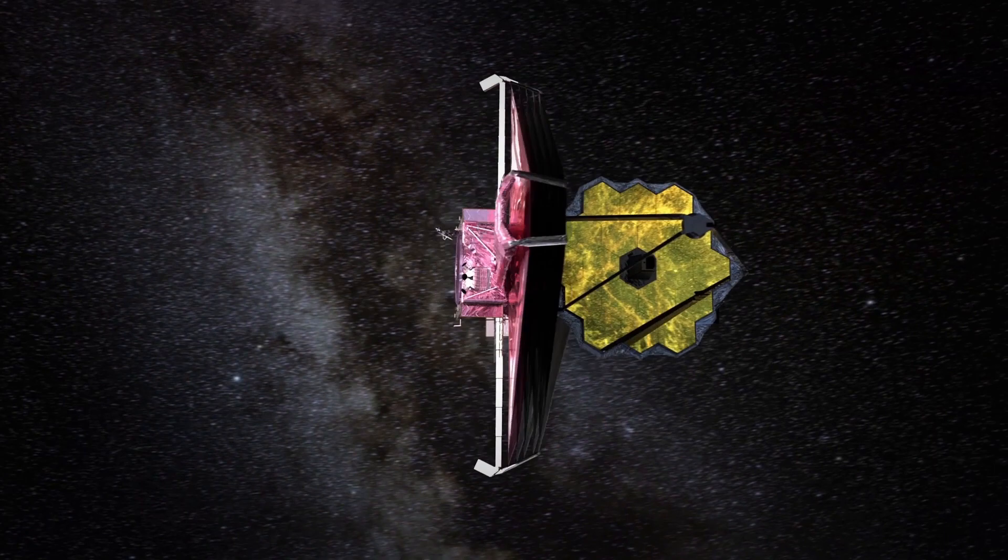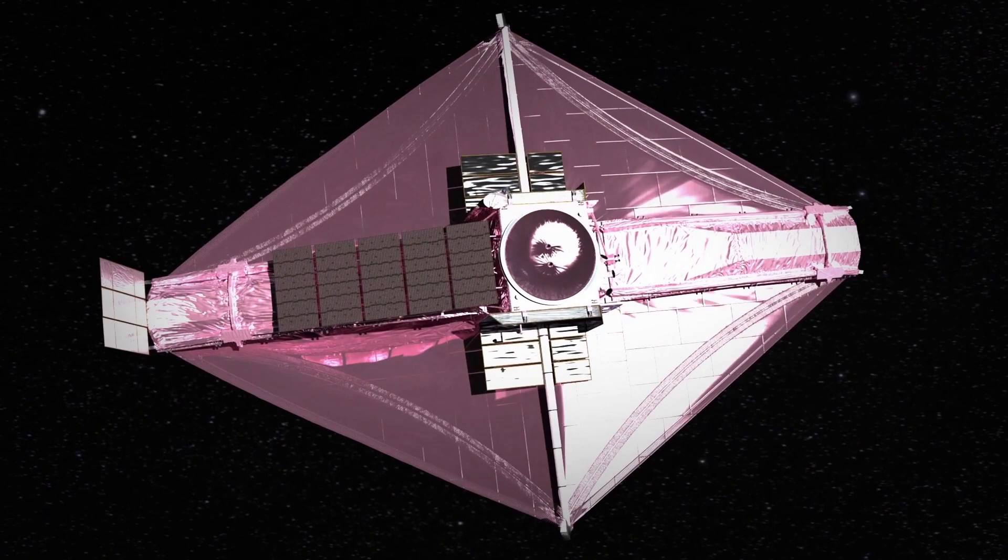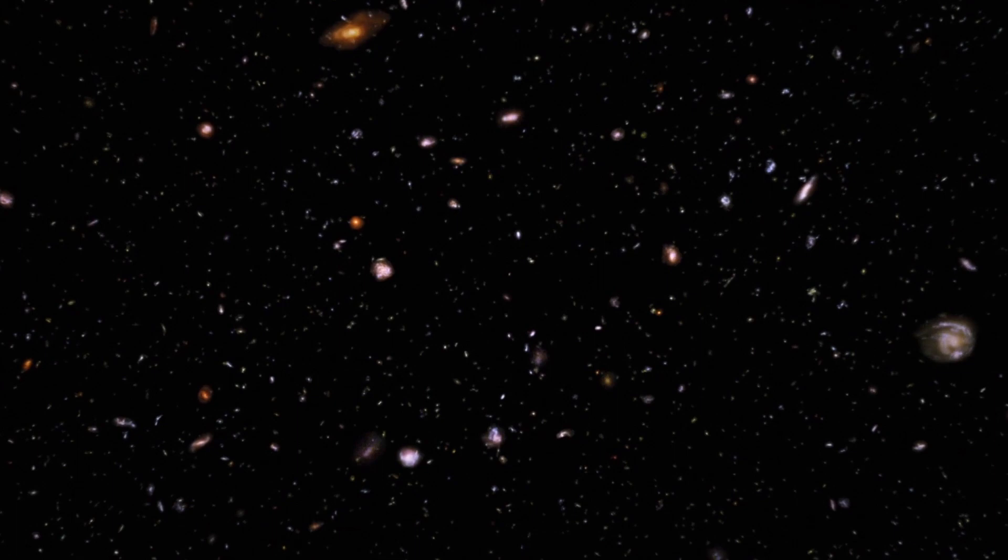It takes time for light to travel from the distant corners of the universe. When light from faraway stars and galaxies finally reaches our telescopes, it shows us those stars and galaxies as they were when the universe was young.